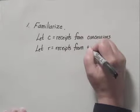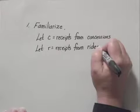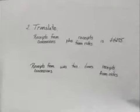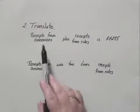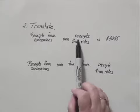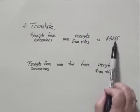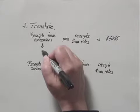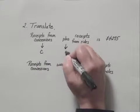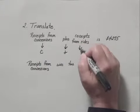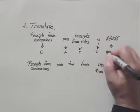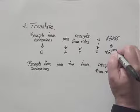It's important to write down what these stand for because at the end we're going to have to know what C is and what R represents. Step two is to translate. We have two statements. The receipts from concessions plus receipts from the rides is $4,275. That translates to C plus R equals $4,275.